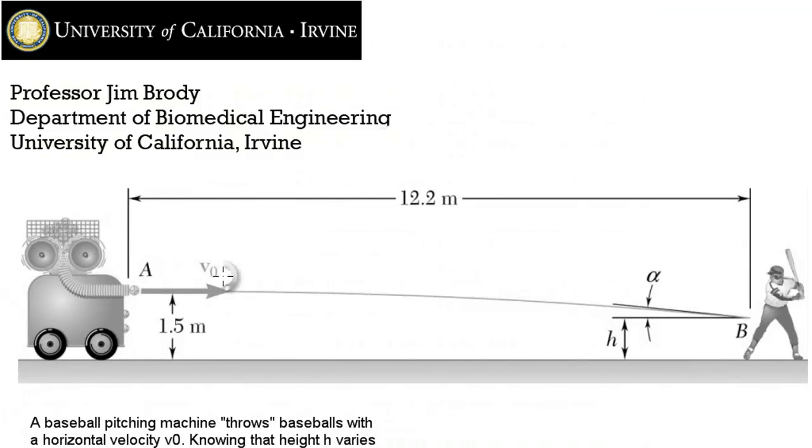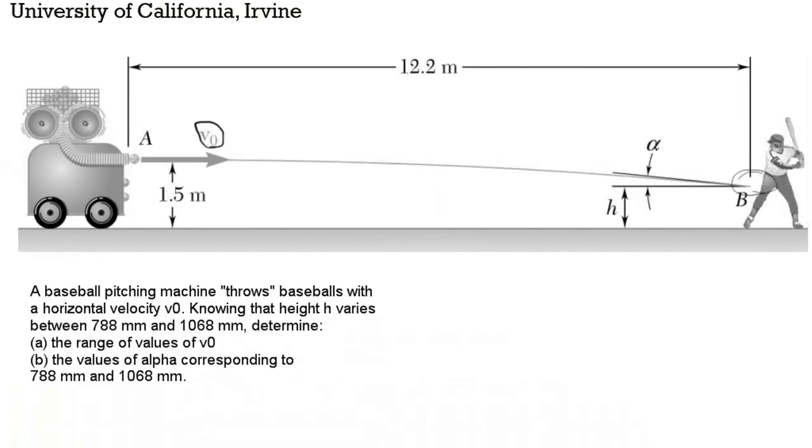A baseball pitching machine throws baseballs with a velocity v0 in a horizontal direction. Knowing that the height h at which the ball arrives at the batter varies between 788 millimeters and 1068 millimeters, that would be the strike zone here. Determine two things. First, the range of values of v0, the initial velocity, and the values of alpha corresponding to the height 788 millimeters and the height 1068 millimeters. Alpha is shown here. It's the angle with respect to the horizontal at which the ball arrives.